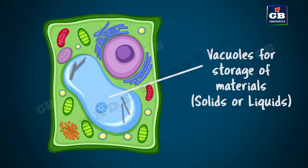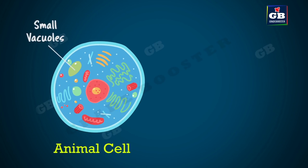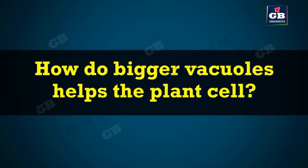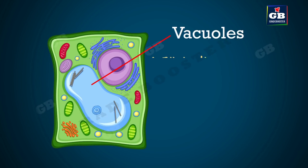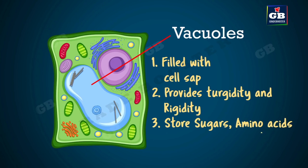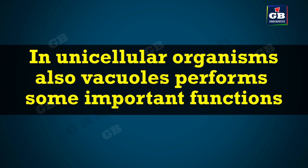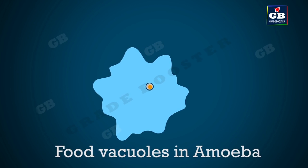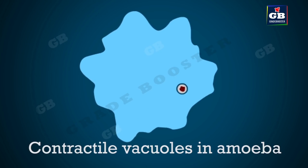Vacuoles are sacks for storage of materials in solid or liquid form. In animal cells, vacuoles are small, whereas in plant cells they are very large, occupying 50 to 90 percent of the cell volume. Vacuoles in plant cells are filled with cell sap and provide turgidity and rigidity to the cell, storing sugars, amino acids, organic acids, and some proteins. In unicellular organisms like amoeba, food enters food vacuoles where it is digested and absorbed. Contractile vacuoles collect and excrete excess water and waste materials.